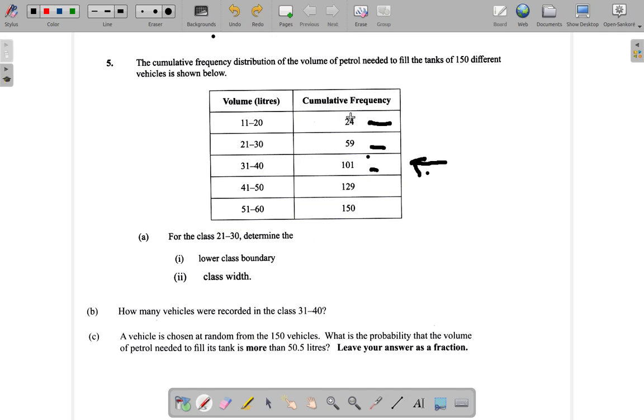So the number in the 11 to 20 class is 24. But this 59 now consists of whatever was in the 21 to 30 class plus the 24.